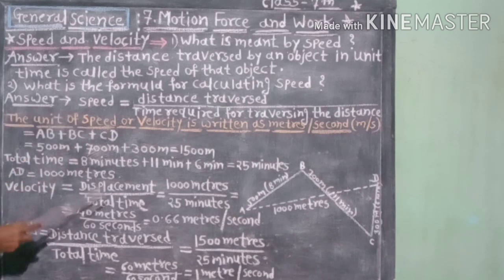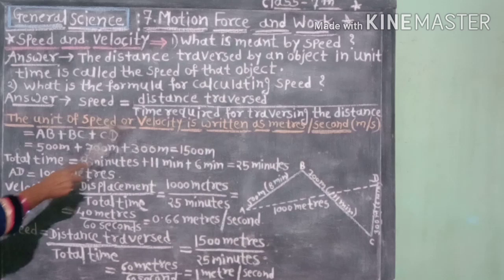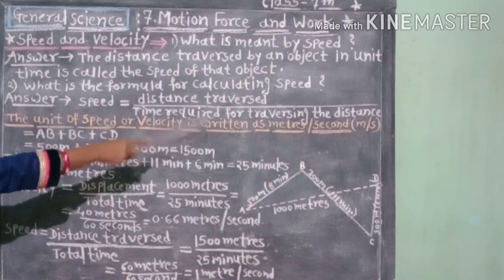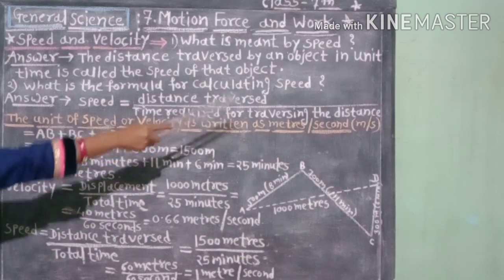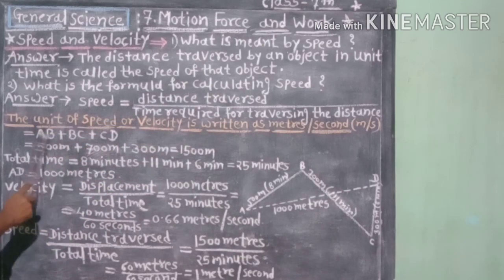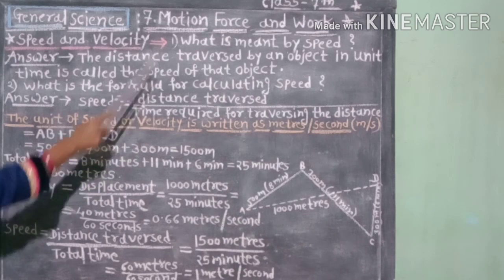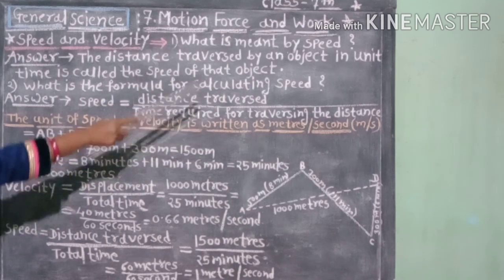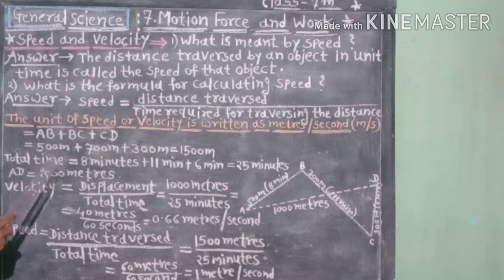The unit of speed or velocity is written as meter per second. सालाची माप वेगाची एकक आहे मीटर पर सेकंद म्हणजेच meter per second असे लिहिले जाते.